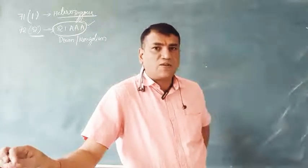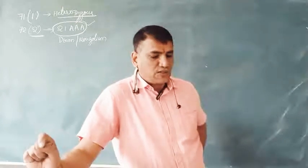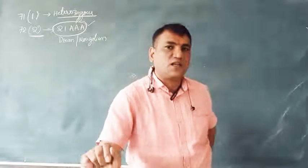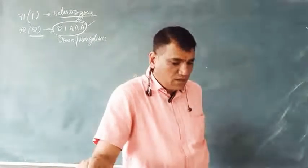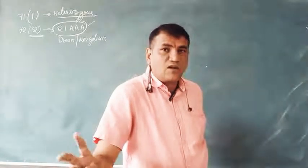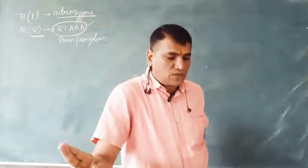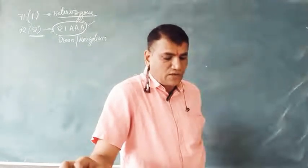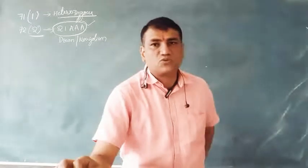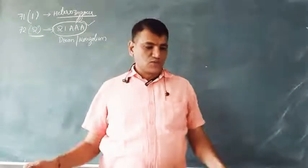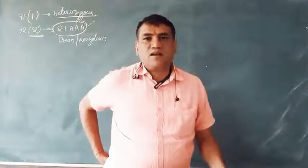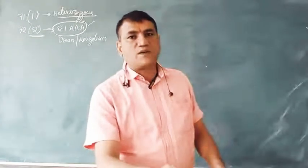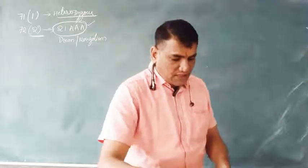Question 84: An individual with 49 chromosomes (44 + XXXXY or similar) has one active X chromosome and three inactive X chromosomes (Barr bodies). If Y chromosome is also present, they are called super males or super females depending on the configuration.